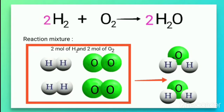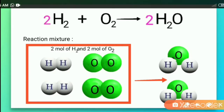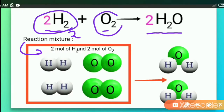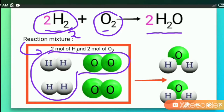Let us take one more example. We know that when hydrogen reacts with oxygen, it gives rise to water. That means two moles of hydrogen react with one mole of oxygen to give two moles of water. Suppose we have taken a reaction mixture of two moles of hydrogen and two moles of oxygen. According to the balanced equation, two moles of hydrogen react with only one mole of oxygen.